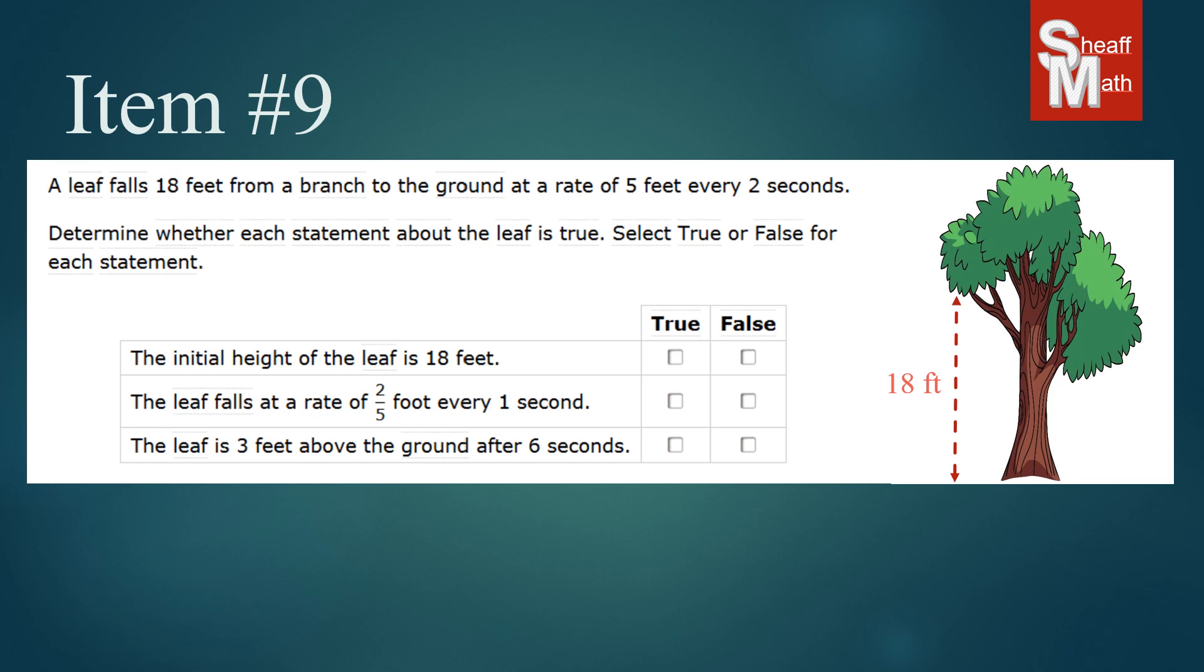And so looking at our first statement the initial height of the leaf is 18 feet. Absolutely it's starting at that branch 18 feet up in the air. That is a true statement.